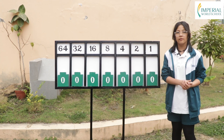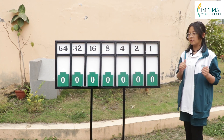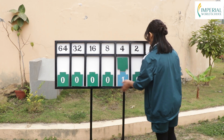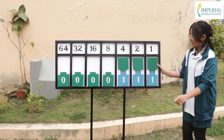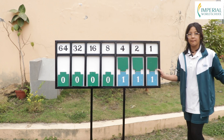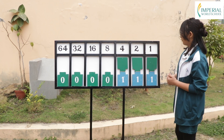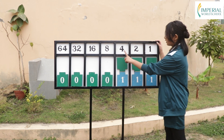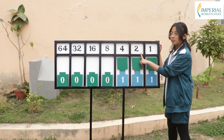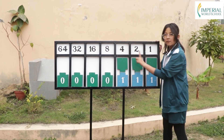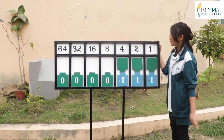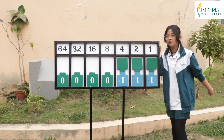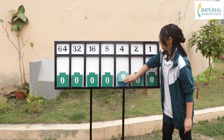Now with that understood, let's convert binary terms into decimal. Let's take the binary term 1 1 1 for an example. If you want to convert the binary term 1 1 1 into a decimal, you see there is 1 four, 1 two, and 1 one. So 4 + 2 + 1 = 7. The decimal term of the binary term 1 1 1 is 7.